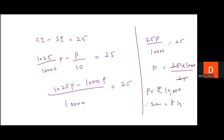Hope the question is clear. If any doubt is there, feel free to ask by commenting in the comment box. Let's move to question number 10. It says: the simple interest on a certain sum for 3 years at 6⅔% per annum is Rs. 13,500. What will be the compound interest on the same sum at the same rate for the same time, compounded annually?